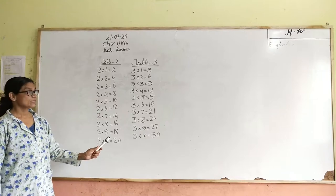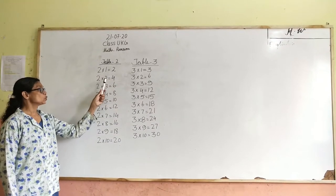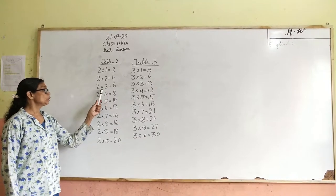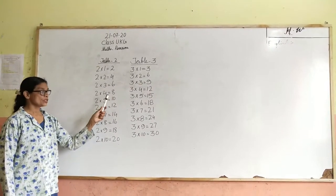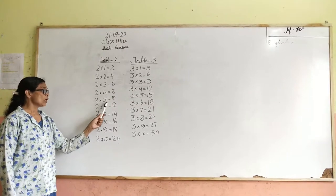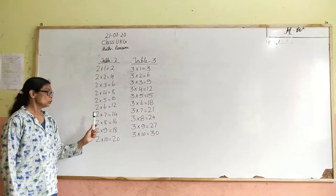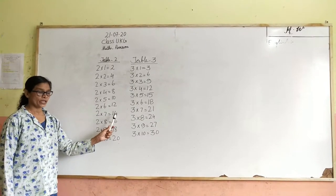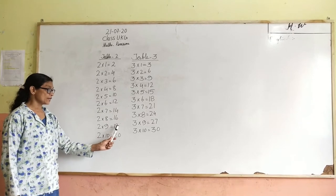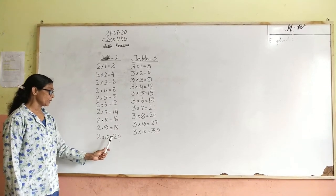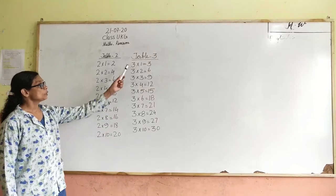Understand? One more time. 2 ones are 2. 2 twos are 4. 2 threes are 6. 2 fours are 8. 2 fives are 10. 2 sixes are 12. 2 sevens are 14. 2 eights are 16. 2 nines are 18. 2 tens are 20. Now table 3.